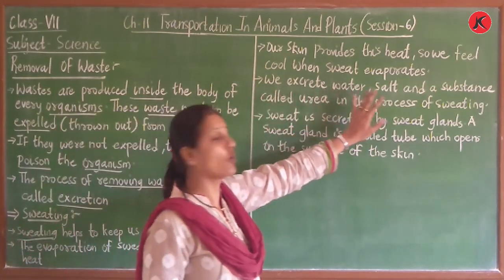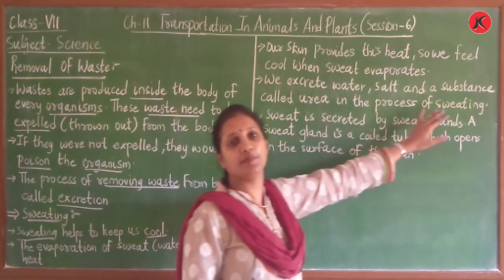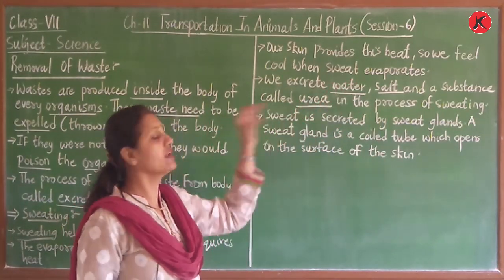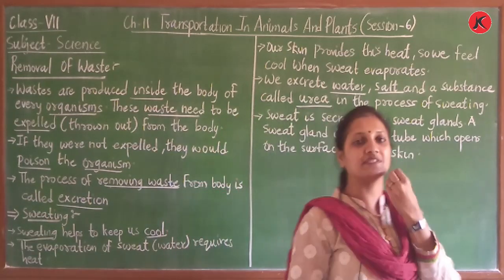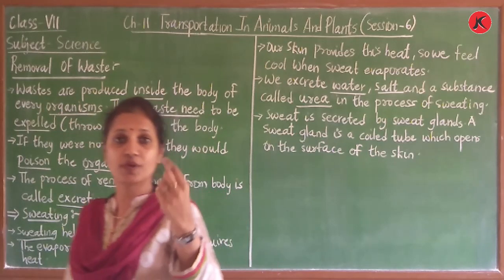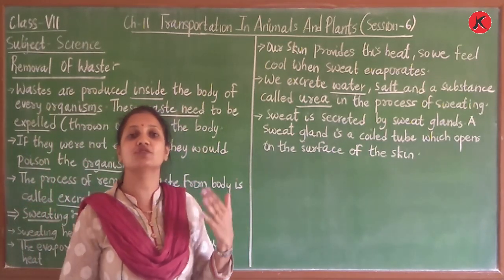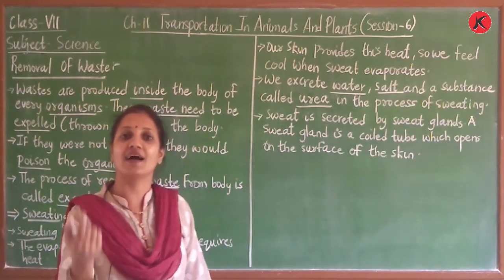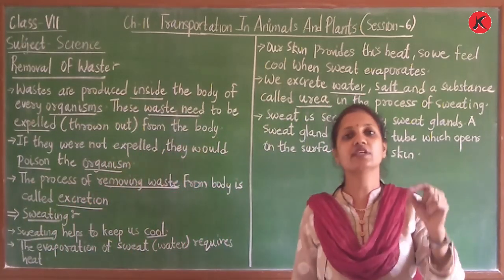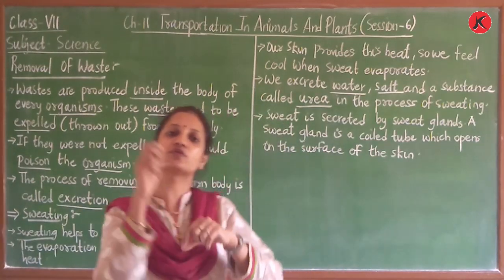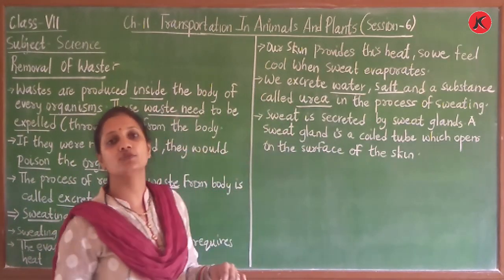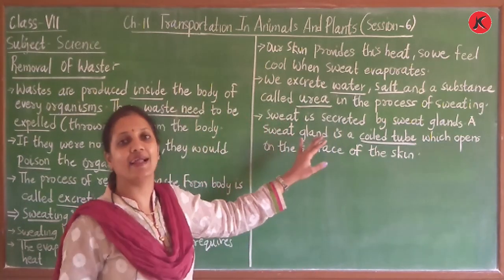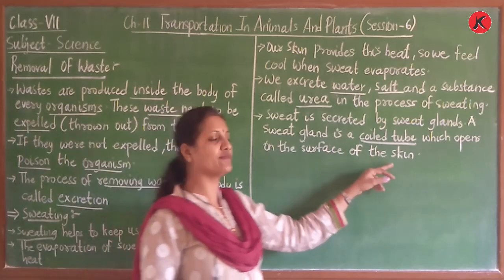When we sweat, water, salt, and a substance called urea are released. When we sweat on our face and it reaches our mouth, how do we taste it? Salty taste. So sweat is secreted by sweat glands. The sweat gland in the skin of our body is a coiled tube which opens on the surface of the skin.